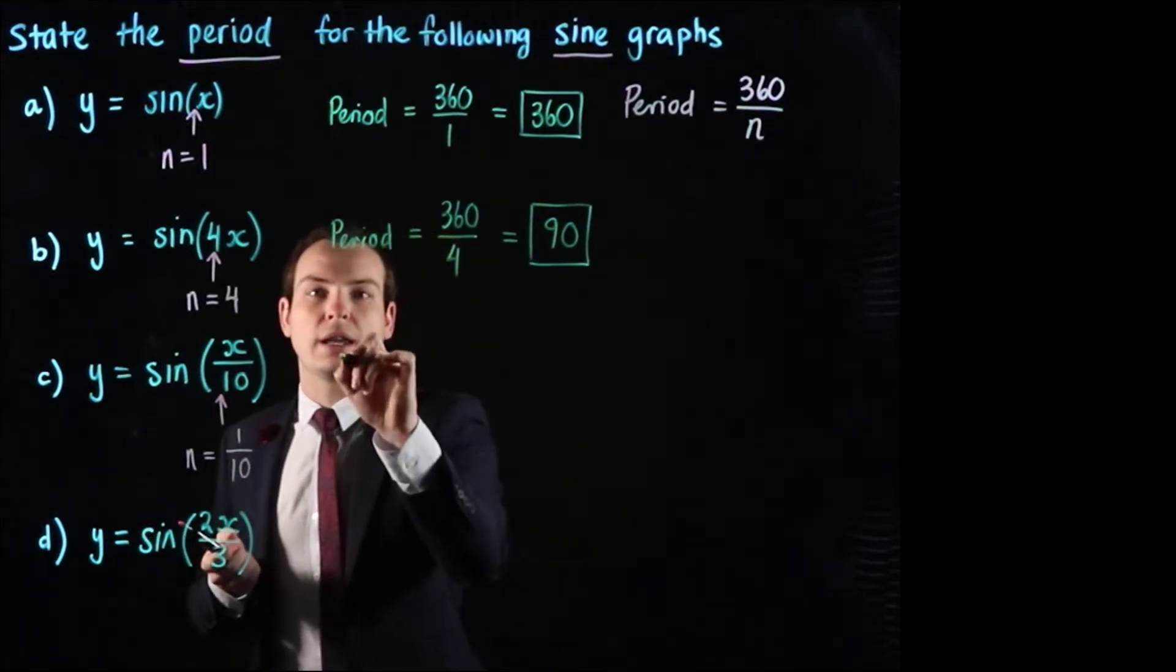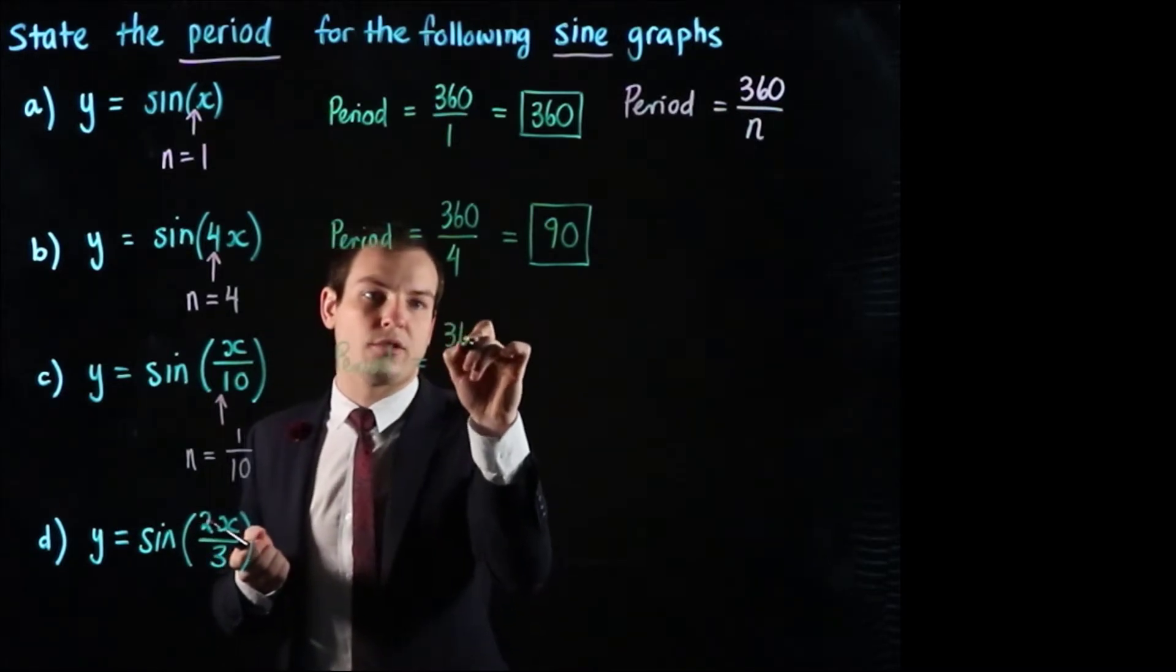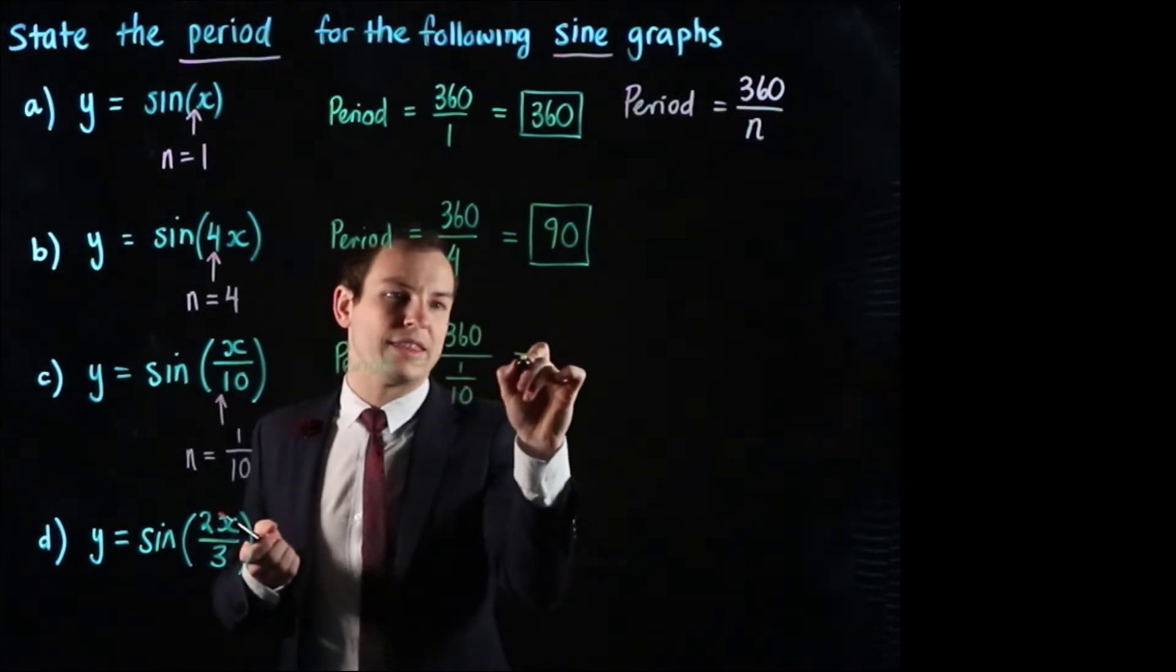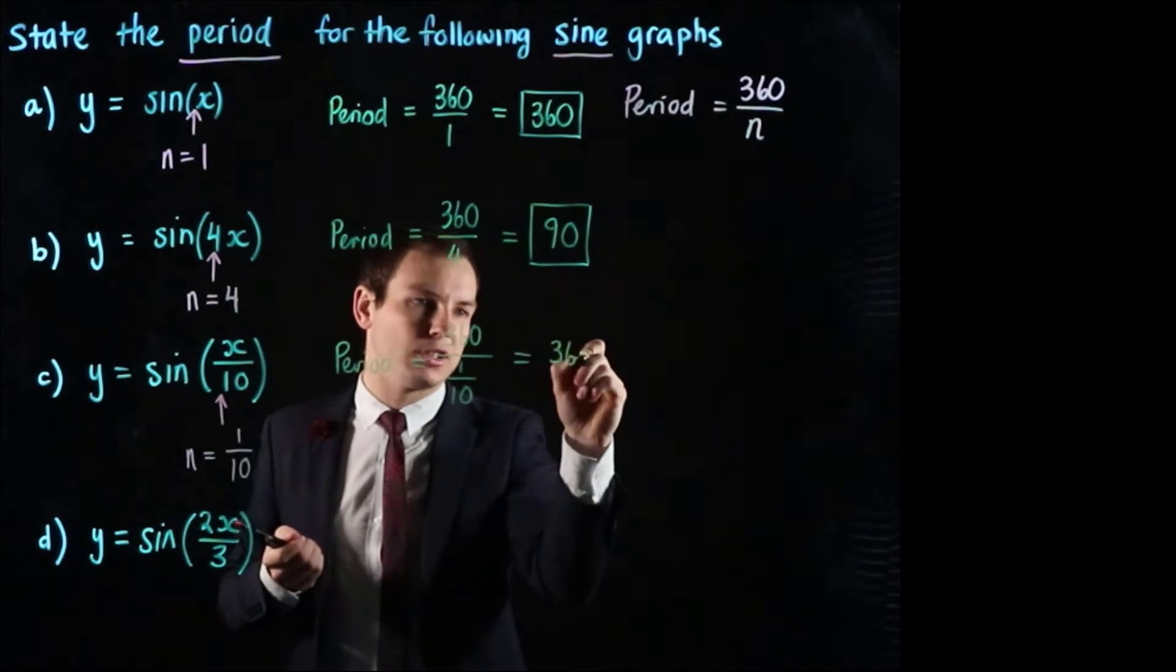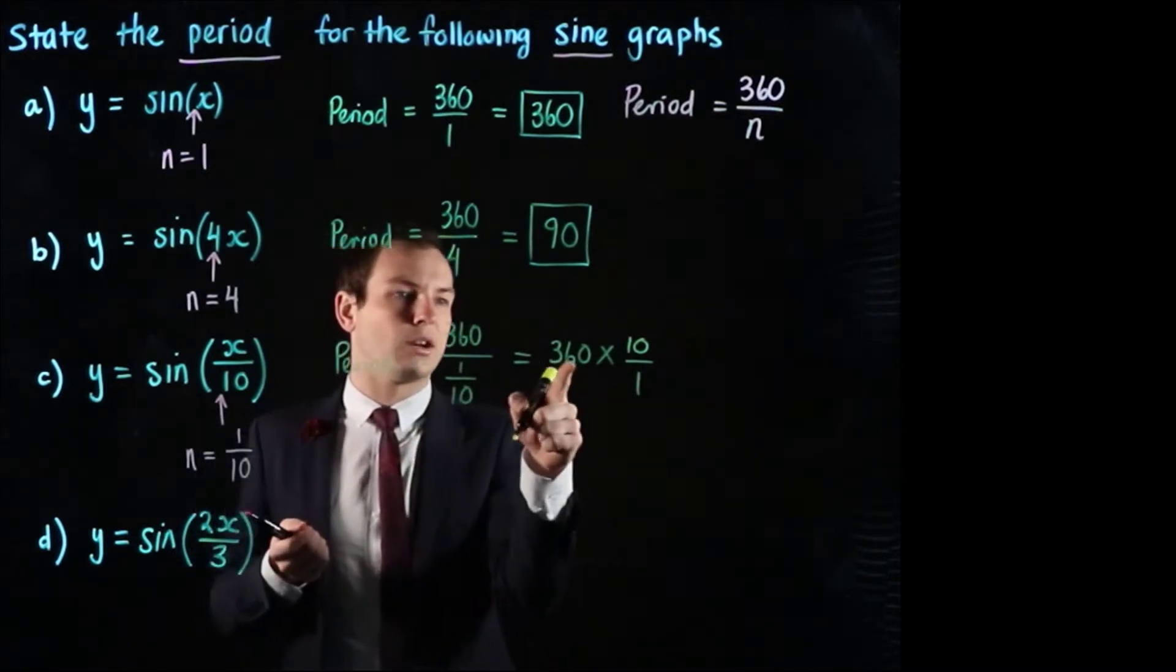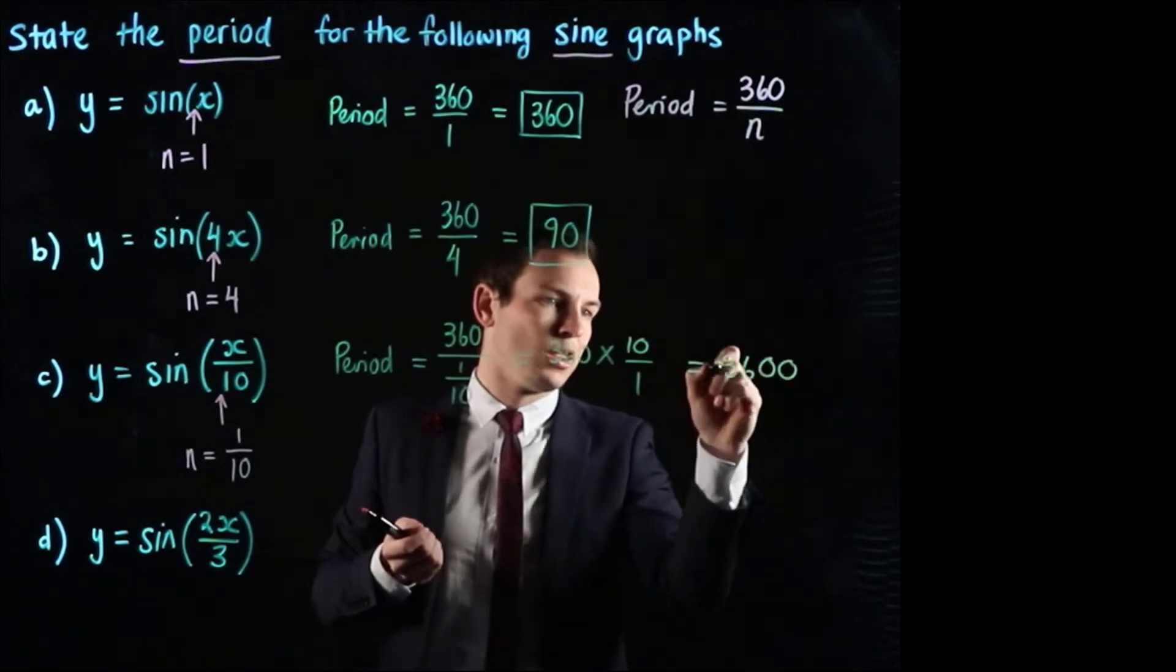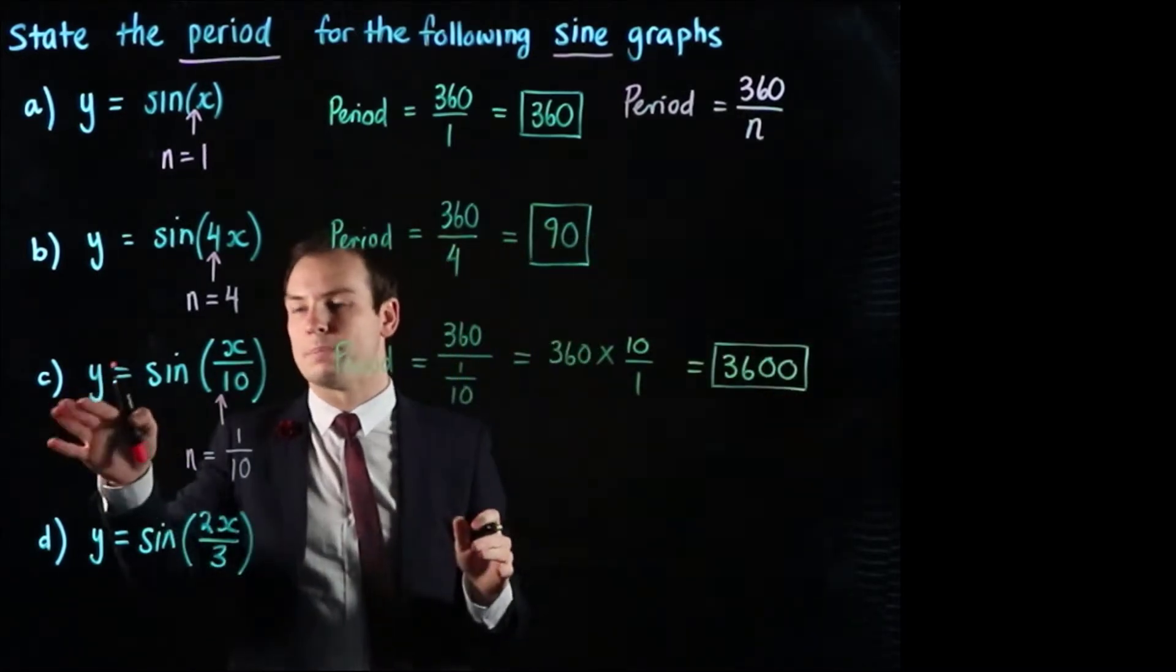So when we go about calculating the period that's going to equal 360 divided by 1 over 10. Now that's the same as 360, and when we divide a fraction we can just multiply by the reciprocal which will be 10 over 1. So this will give a period of 360 times 10 which is 3,600. So that's the period for part c.